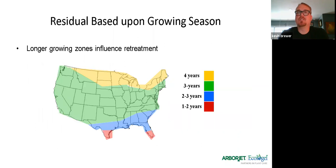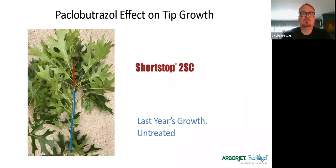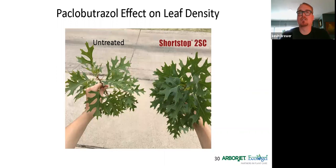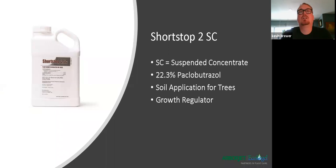Up here in the northeast we get about three years out of it; in southern New England four years; in northern Vermont and Maine; down in Florida it's one to two years. This is based on the growing season — the more growing trees do, the faster they use this product. We have a much shorter growing season up here so we get a lot more longevity. Here are some images showing how it affects oak growth — you can see it reduces growth by about 60% year over year. You can see a much darker leaf, much healthier chlorophyll — they actually look a lot more robust as well.